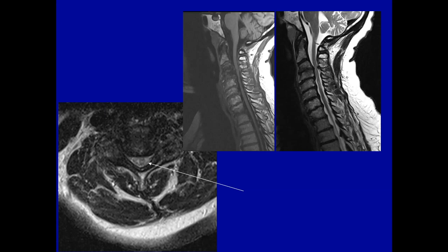A lot of older people — seventies, eighties — can have some narrowing of the canal without symptoms and usually without signal in the spinal cord. So sometimes it's hard to know what to do with those patients. Be aware that not every 70 or 80 year old with a narrow subarachnoid space has a corresponding neurologic problem, because the cord can really accommodate to a large degree changes in the container.